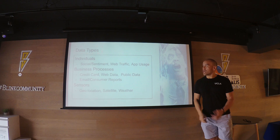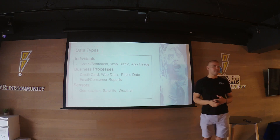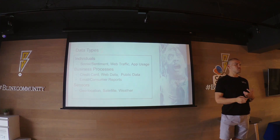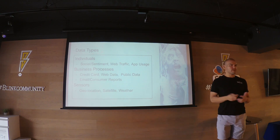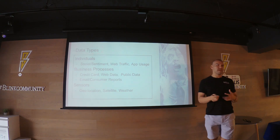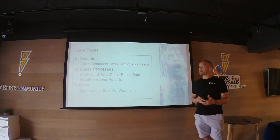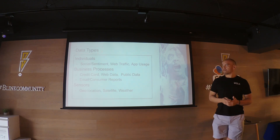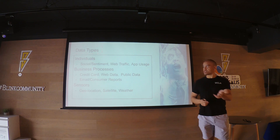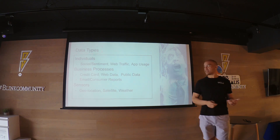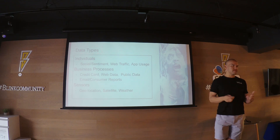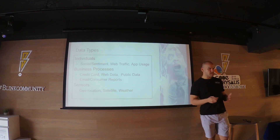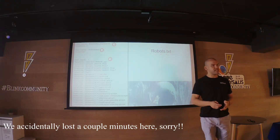Some of the different alternative data types: the individual segment includes social media - Twitter, Facebook - to determine sentiment on a given stock based on who's tweeting positively or negatively. Web traffic, how often a website is being visited, app usage. Business process data types include credit card data, web data, public data, emails. It also goes further into sensors like geolocation, satellite, and weather.